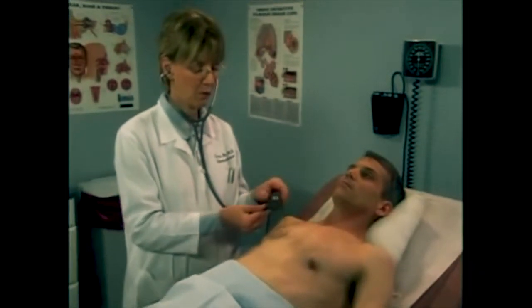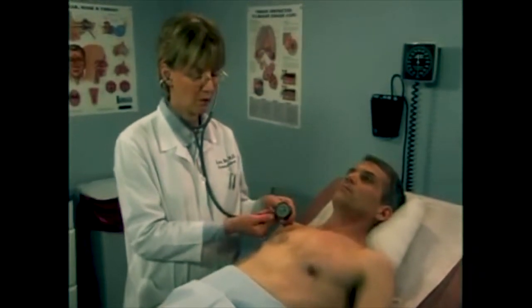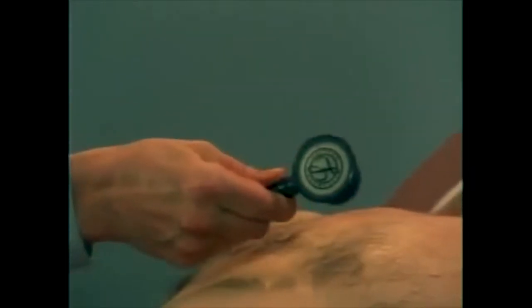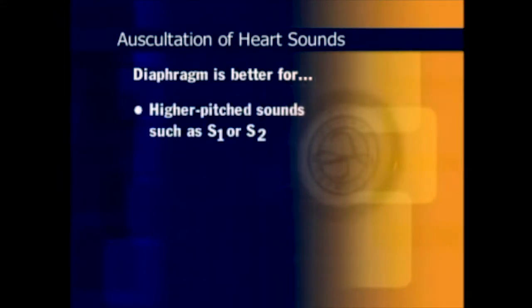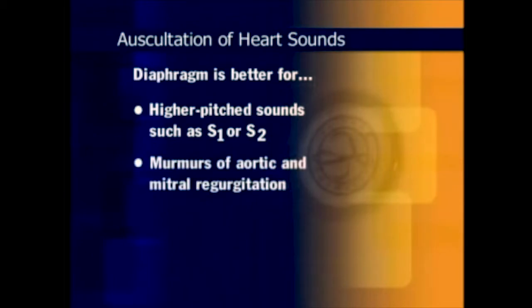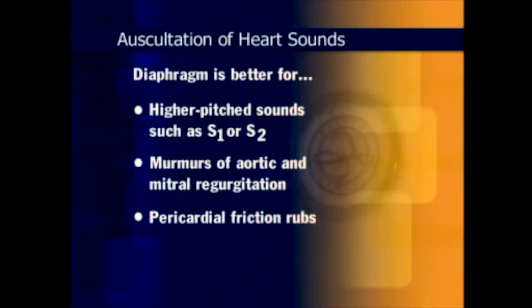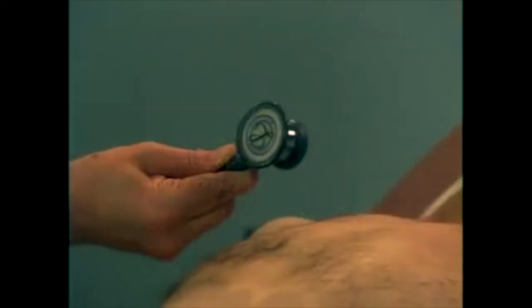When auscultating, it's important to know your stethoscope. The diaphragm is better for detecting higher-pitched sounds, such as S1 or S2, the murmurs of aortic and mitral regurgitation, and pericardial friction rubs.